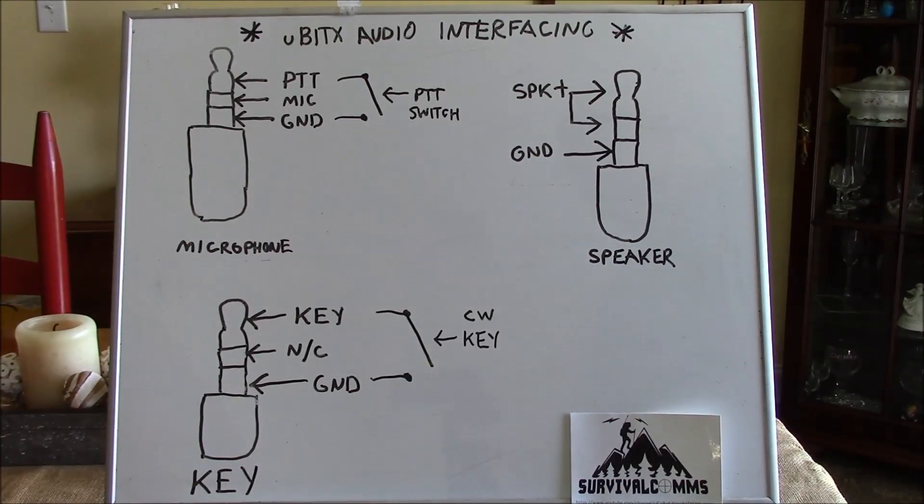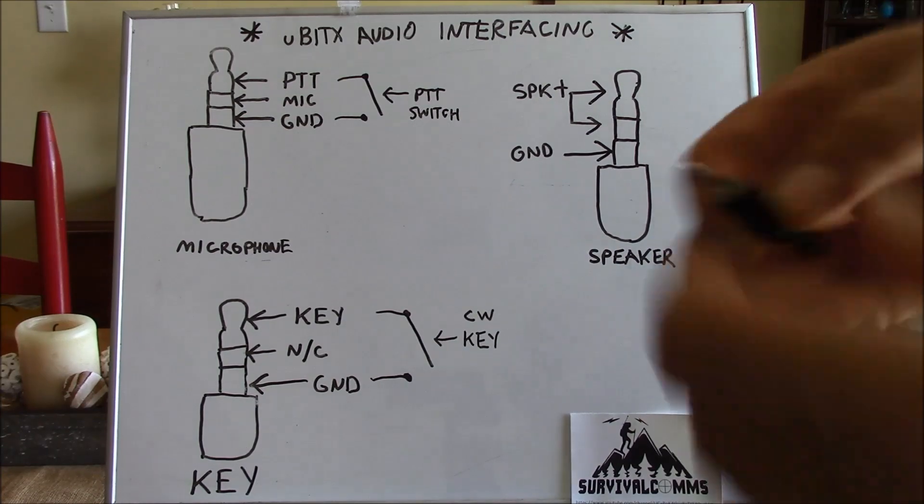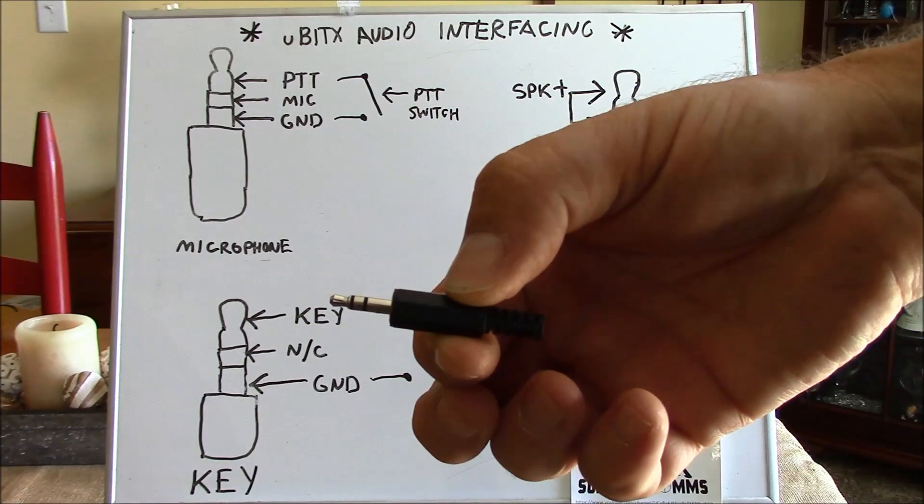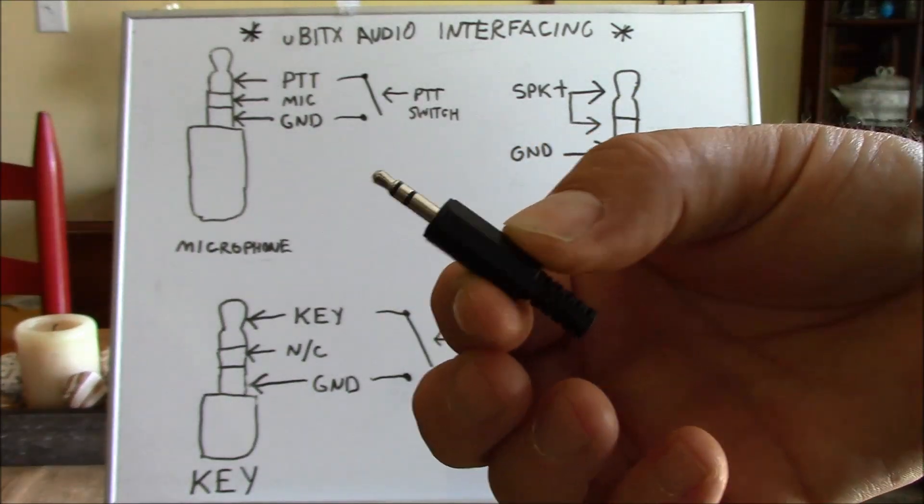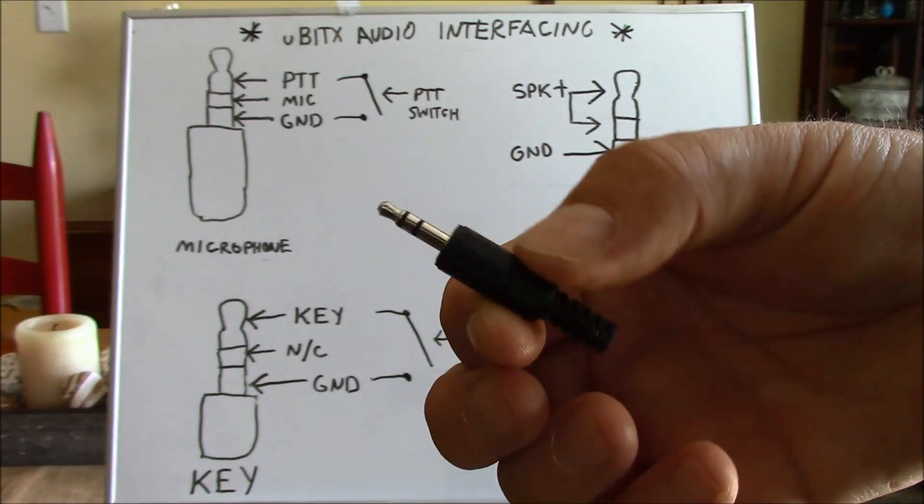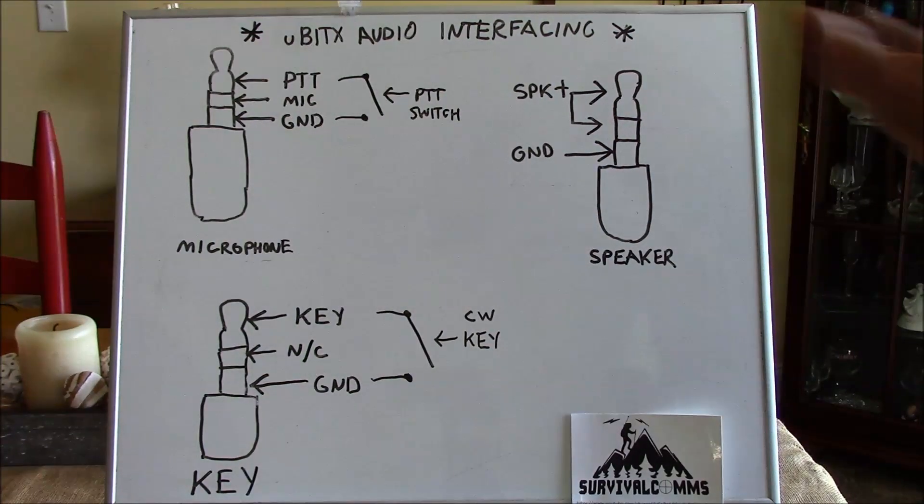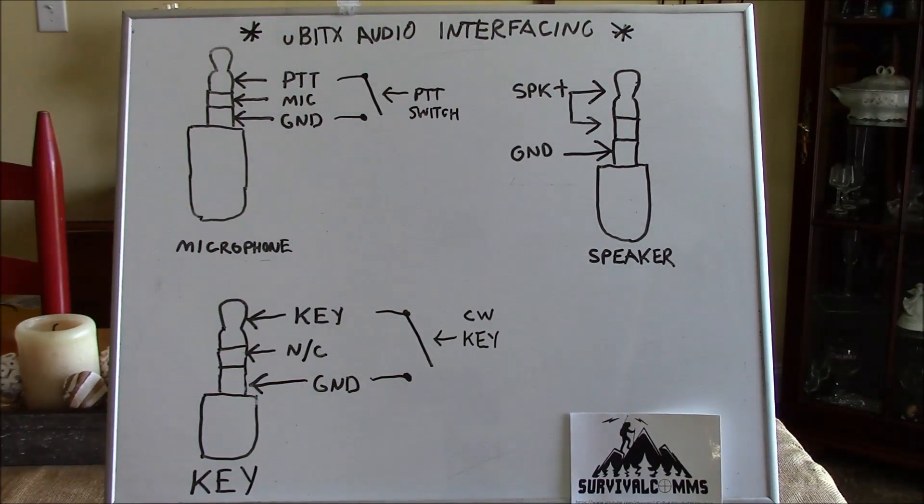The three individual ports on our MicroBitX that interface to audio accessories or basically allow us to communicate with the world outside of us, or to hear what's going on in the world outside of us, use a 3.5 millimeter stereo connector. You can get these things at Amazon, you can buy a bag of ten of them for like five dollars so they're not terribly expensive and you can use these to interface your own accessories.